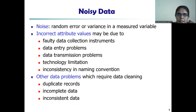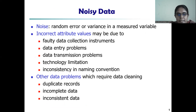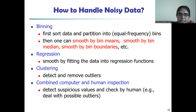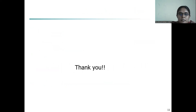Noisy data can be any random error or variance in a measured variable. These incorrect attribute values may be due to data entry problems, data transmission problems, or any inconsistencies. There are other problems which also require data cleaning, such as duplicate records or inconsistent and incomplete data. Noisy data can be dealt with using the process called binning, or regression clustering, and it can also be dealt with with the help of human inspection. In the next lectures, we will look into other data pre-processing techniques such as data integration, reduction, and transformation.